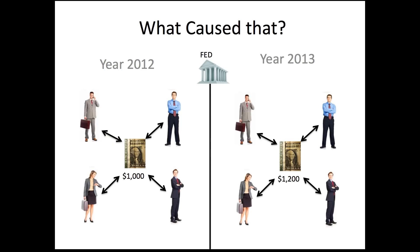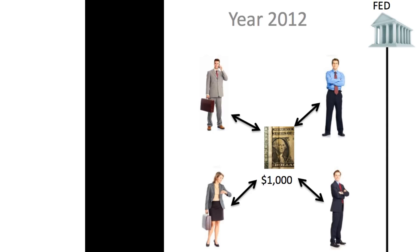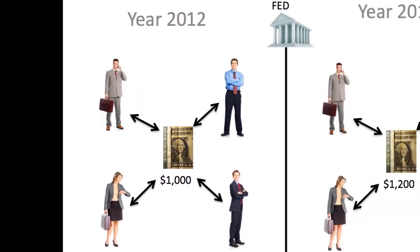So what caused the price of milk to go from $4 to $4.12? Let's look at year 2012. We have four people, and these four people symbolically represent all the people across our entire country. Let's say the federal government has put $1,000 into this system of people that are working, and that $1,000 is what they have to use to trade amongst each other. Remember, money is just a symbol of their work, so they can trade it amongst each other. The value of each dollar is dependent on what that person might need — whether it's food, clothes, transportation, or whatever.